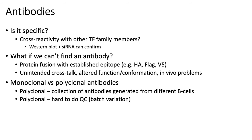If you can't produce a very good monoclonal antibody against your TF, there are alternatives. For example, you can fuse a tag — such as the HA, FLAG, or V5 tag — to your transcription factor of interest, and there are antibodies that can recognize these different tags or epitopes. Part of the problem with going down that road is that you can have unintended crosstalk between the epitope fused to your transcription factor, which can lead to altered function or 3D conformation of your protein. Also, for in vivo studies, it becomes harder to make fusion proteins.